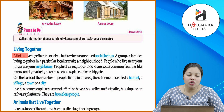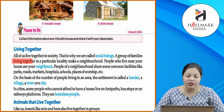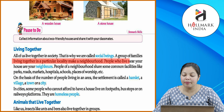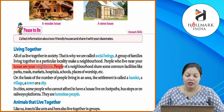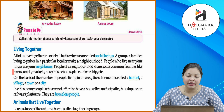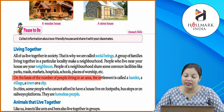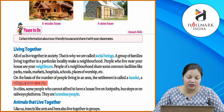Living together: all of us live together in society, that is why we are called social beings. A group of families living together in a particular locality makes a neighborhood. People who live near your house are called neighbors. People of a neighborhood share some common facilities like parks, roads, markets, hospitals, schools, places of worship, etc. On the basis of the number of people living in an area, the settlement is called a hamlet, a village, a town or a city.